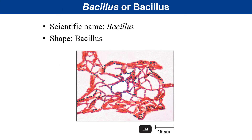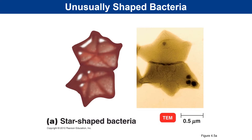Sometimes the name of an organism will also tell us about its morphological shape. On rare occasion, some bacteria are discovered to not possess traditional shapes. An organism discovered in the early 2000s has the genus name Stella, in reference to its star shape. Several Stella species all possess a gram-negative background in terms of cell wall structure.